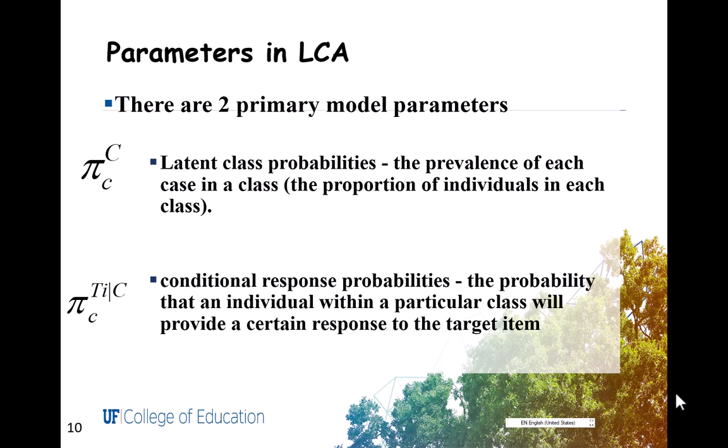The parameters estimated in a latent class analysis, there are two of them. The latent class probabilities, which is the prevalence of each case in a class, which is also the proportion of individuals in each class, and the conditional response probabilities,